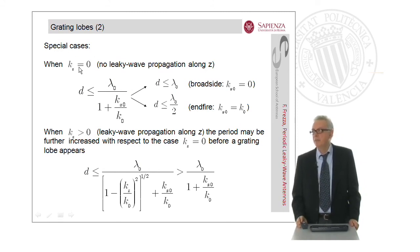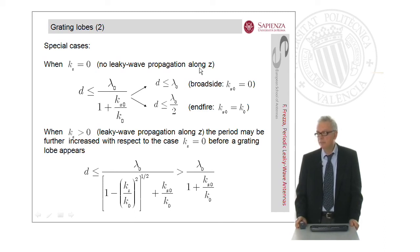There are some special cases. When K_z equals zero, but that means we have no leaky wave propagation along z, this is analogous to the cut-off condition. In this case, we have a different limit: d is less than or equal to lambda zero for broadside, that means also K_x0 equals zero. Instead, for endfire propagation, when K_x0 equals K_0, the limit is one half of the vacuum wavelength. However, when K_z greater than zero, that is, we have leaky wave propagation along z, the period may be further increased with respect to the case K_z equals zero before a grating lobe appears. This is the relation to be employed now.